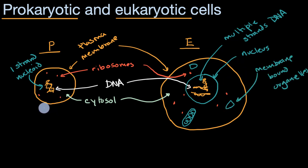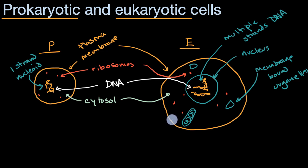Prokaryotes are generally unicellular organisms, which means the whole organism is just a cell. Eukaryotic cells can be an organism on their own — unicellular organisms — but they can also be the building blocks of multicellular organisms, like ourselves or a tree.